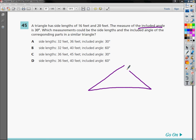So basically, I have a triangle. Maybe it looks like this. So this is 30 degrees. This side is 16, and this side is 20.